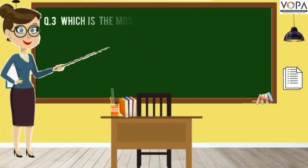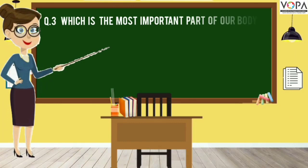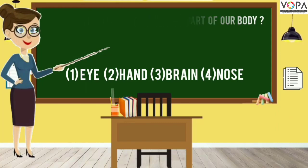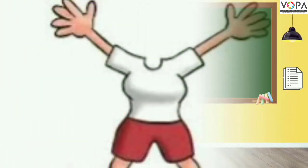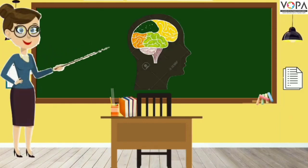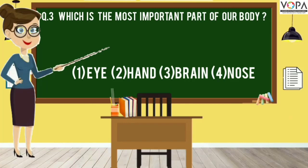Question number 3. Which is the most important part of our body? Option 1: Eye. Option 2: Hand. Option 3: Brain. And Option 4: Nose.